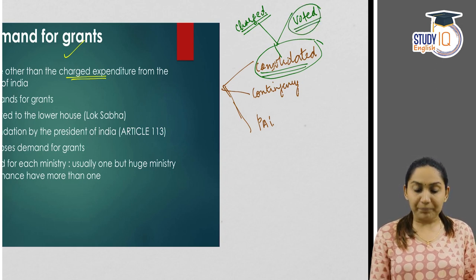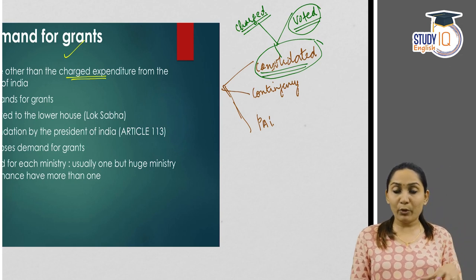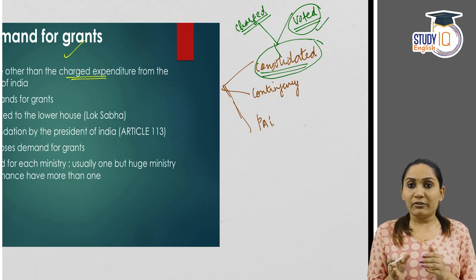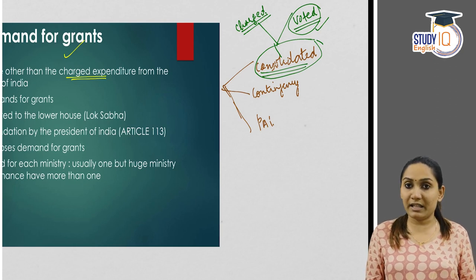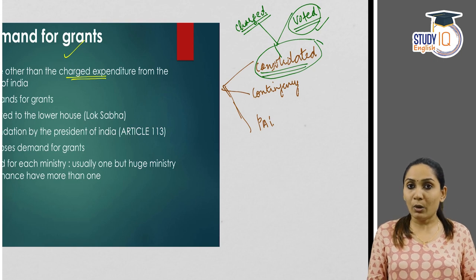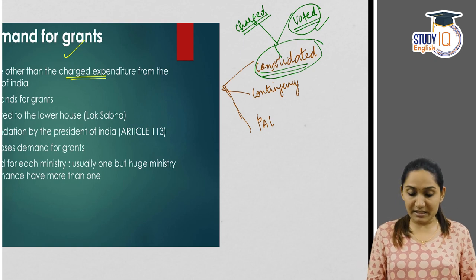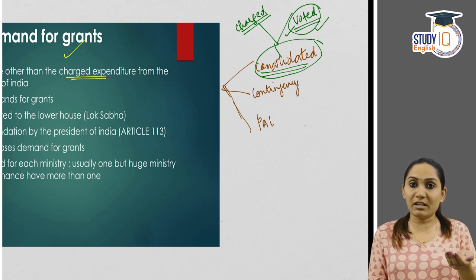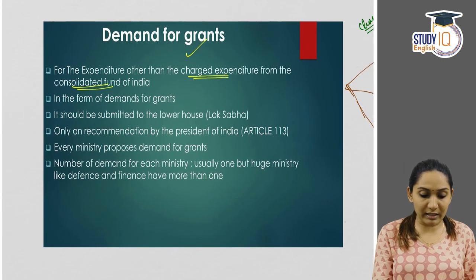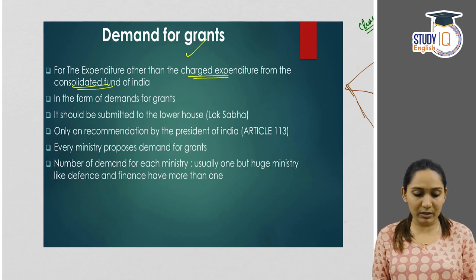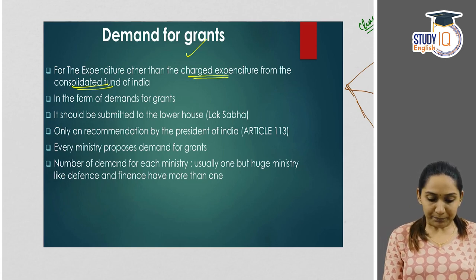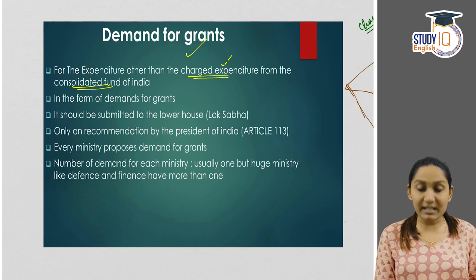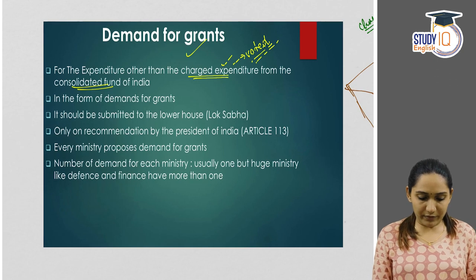All expenditures other than the charged expenditures are known as voted expenditure. Voted expenditure means those expenditures for which the vote of the parliament is important to be withdrawn from the Consolidated Fund of India. Any expenditure other than charged expenditure needs the approval and voting of the parliament in order to withdraw the money to meet that particular expenditure. The way the government asks permission of the parliament for this expenditure is known as demand for grants. So demand for grants is basically the request put by the government before the parliament to get approval for the voted expenditure to be withdrawn from the Consolidated Fund of India.